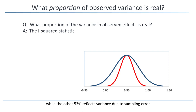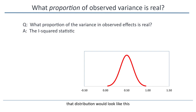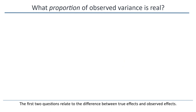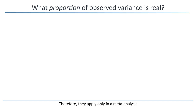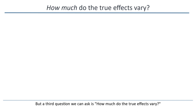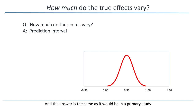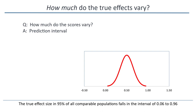If we could somehow get rid of the sampling error so that we could plot the true effects, that distribution would look like this. The first two questions relate to the difference between true effects and observed effects, and therefore they apply only in a meta-analysis. But a third question we can ask is how much do the true effects vary? This is the same question that we ask in a primary study, and the answer is the same: it is addressed by the prediction interval. The true effect size in 95% of all comparable populations falls in the interval of 0.06 to 0.96.